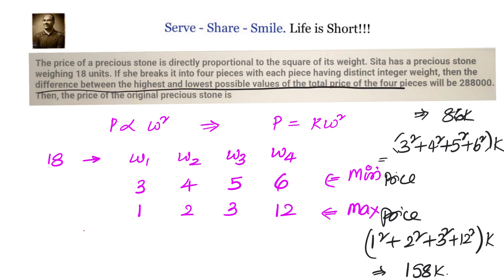We have been given that the difference between the highest and lowest possible values of the total price of the four pieces will be 2,88,000. That means the difference of this should be equals to 2,88,000. When you do that, we get 72K equals to 2,88,000. That will give you K equals to 4,000.